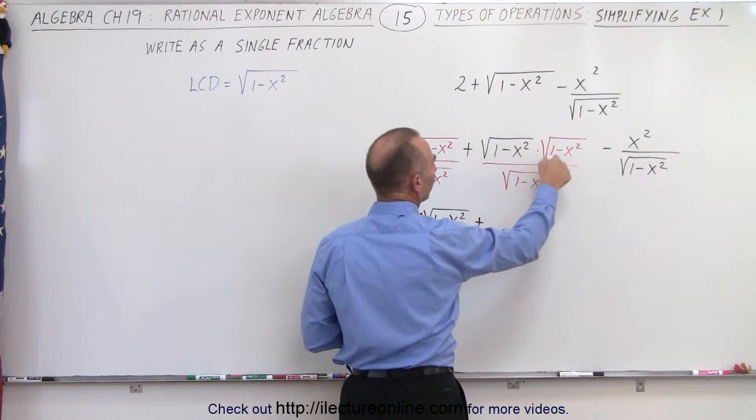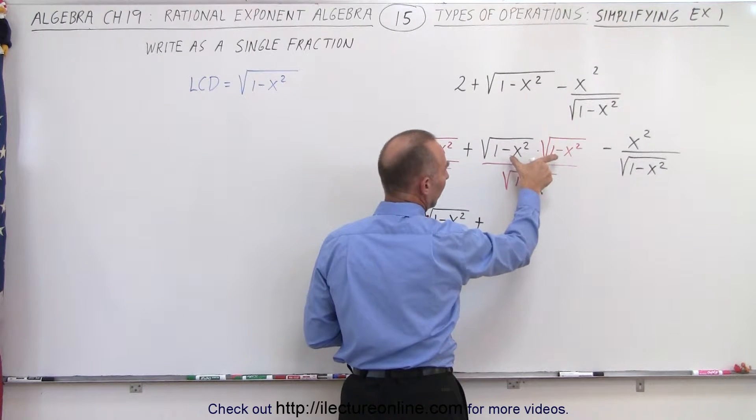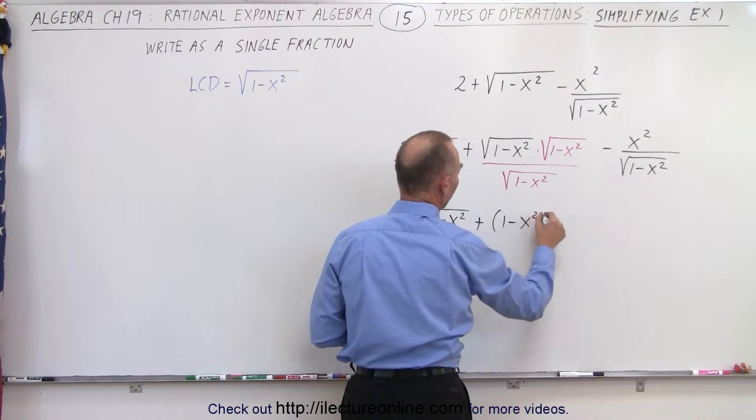now, this times this, when I multiply and I have two radicals, and what's inside the radicals is identical, this simply becomes the quantity 1 minus x squared,